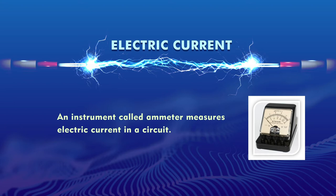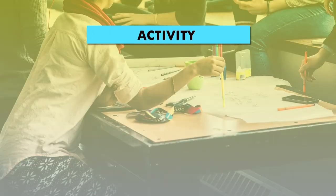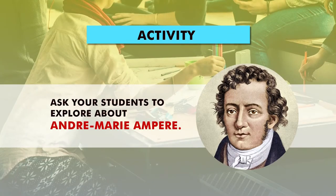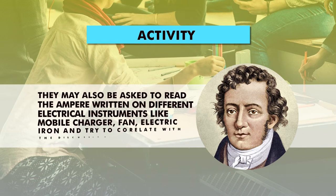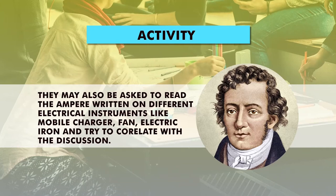Electric current is measured with an instrument called an ammeter, which is always connected in series. To engage learners, ask them to explore about André-Marie Ampère — what he discovered. Also ask them to read the ampere rating written on different electrical instruments at home: mobile chargers, fans, electric irons, and other devices. Sometimes it is even written on the switchboard. When they read those values, they will be able to correlate the discussion about electric current.